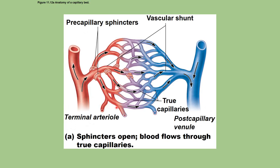At the capillary bed — the area between the arteriole and the venule where all the capillaries are — sphincters are small circular muscles that can contract and regulate the amount of blood flow through the capillary bed depending on the needs at that particular time. This is where exchange actually occurs. As blood enters from the terminal arteriole, oxygen and nutrients leave the blood. As it moves toward the venous side, it picks up carbon dioxide and other waste products.